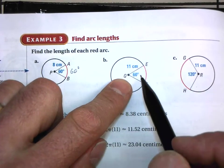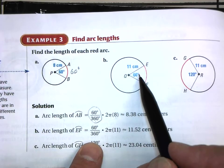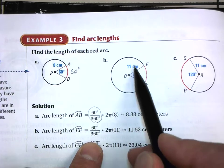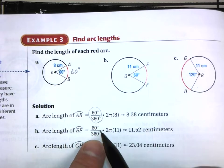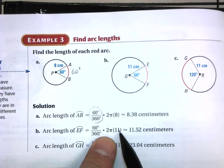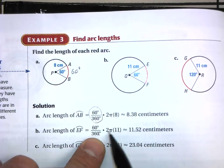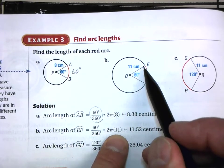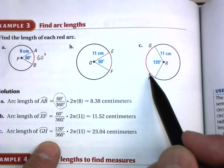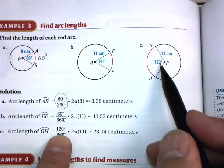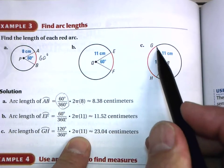Here's another one using the same principle. We want the length of this arc: 60/360 of the entire circumference, using a radius of 11. And the last example: find the length of this arc, which is 120/360 of the entire circumference, equal to 2π times the radius.